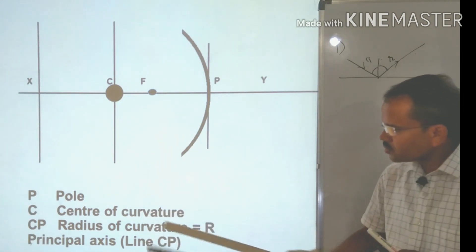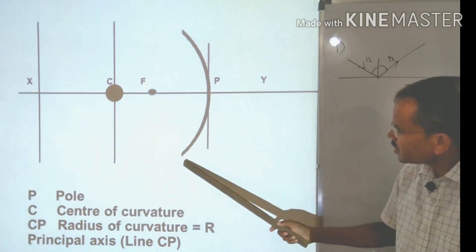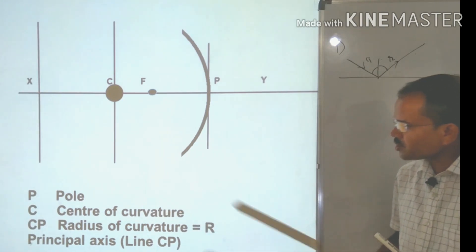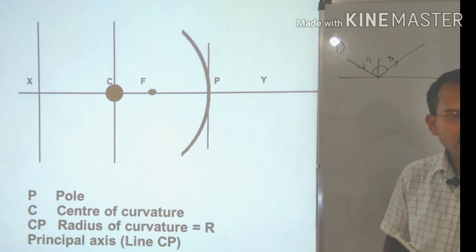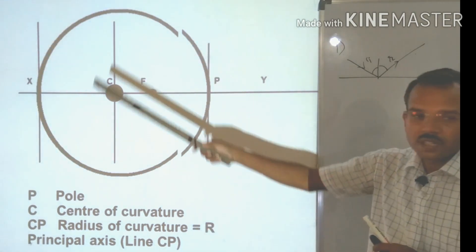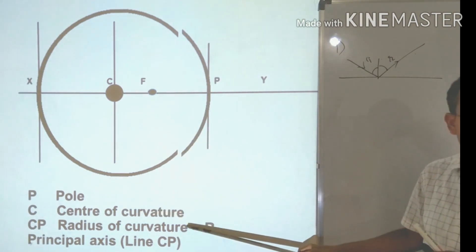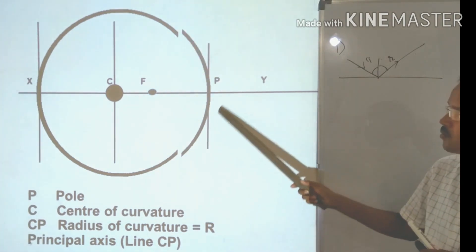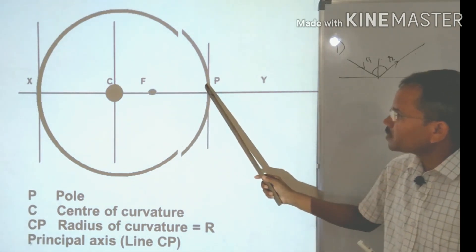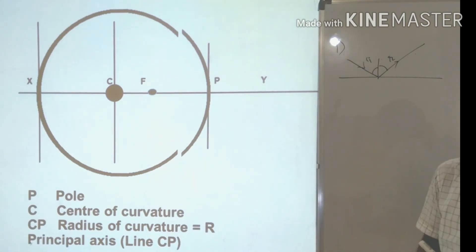Now let us understand four important terms using a diagram. First, the pole: the center of the mirror surface is called the pole, represented by capital P. Second, the center of curvature: if we consider the mirror as part of a complete sphere, the center of that whole sphere is called the center of curvature, represented by C. Third, the radius of curvature: the distance from C to P is called the radius of curvature, represented by capital R.